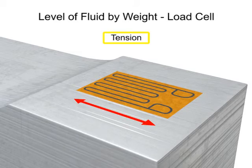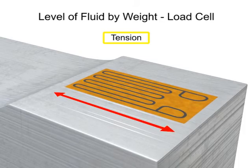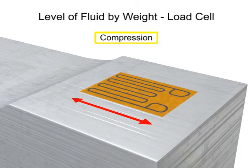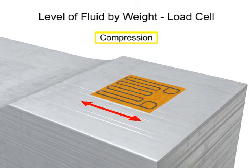In tension, the area narrows and the resistance increases. Conversely, in compression, the area thickens and resistance decreases.